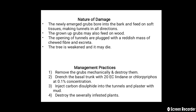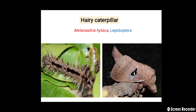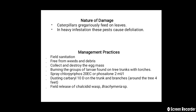The next pest of Sapota is the hairy caterpillar, that is Metanastria hyrtaca. It belongs to the order Lepidoptera. Here we can see the many hairs on the body of the caterpillar, and the adult moth. Nature of damage: the caterpillars gregariously feed on the leaves, and in heavy infestation this pest causes defoliation of the plant. Management: follow field sanitation, keep free from weeds and debris, collect and destroy egg masses, burn groups of larvae found on tree trunks with torches, spray with chloropyrifos 20 EC or phosalone 2 ml per litre, dust carbaryl dust on the trunk and branches, and release chalcid wasp — Brachymeria species.